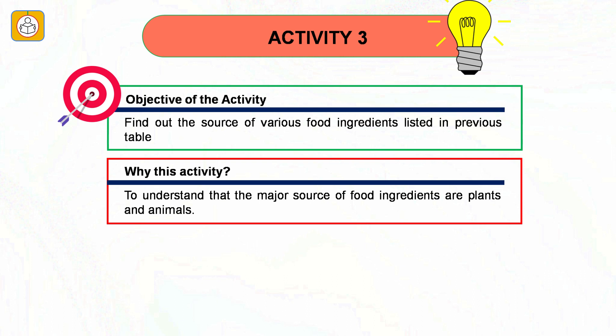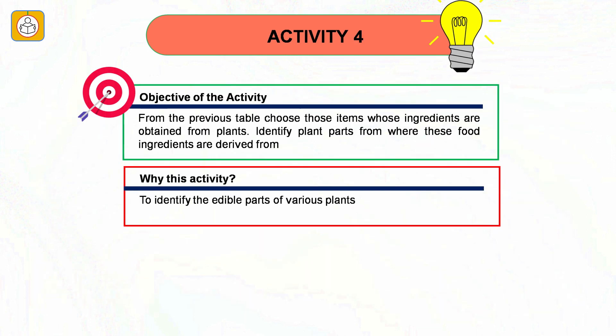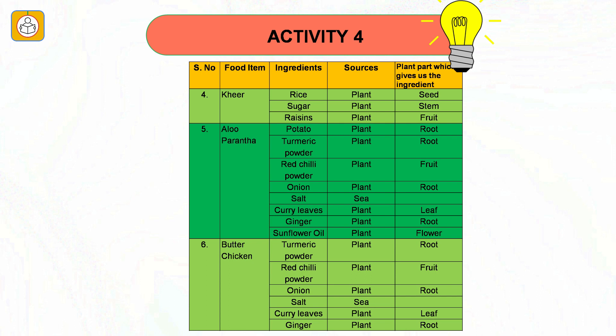Activity number three: Find out the source of various food ingredients listed in the table. This activity helps us understand that the major sources of food ingredients are plants and animals. Activity number four: From the previous table, choose items whose ingredients are obtained from plants and identify the plant parts from where these food ingredients are derived. This helps identify edible parts of various plants — the edible part varies from plant to plant and may be the seed, root, fruit, stem or leaves.